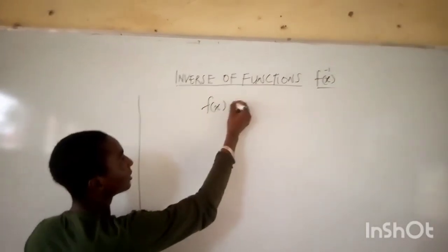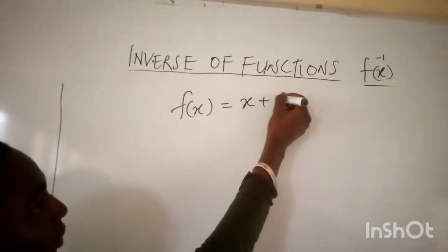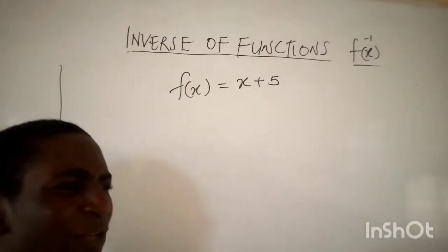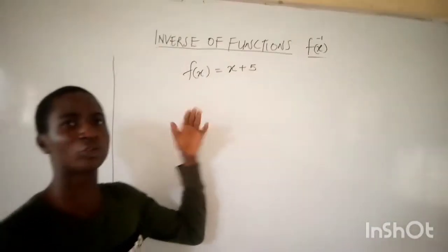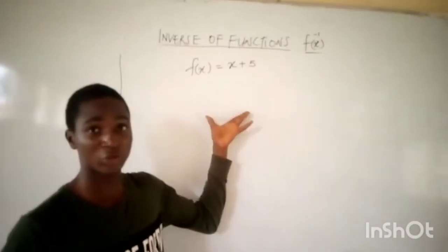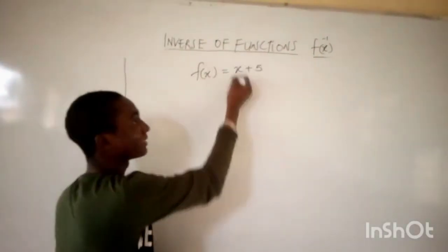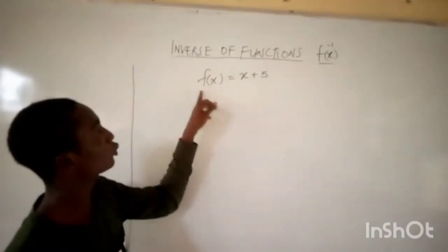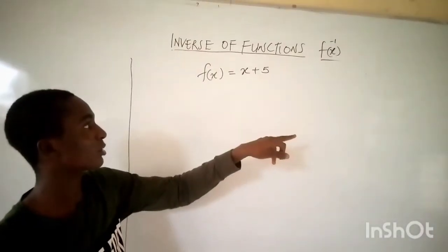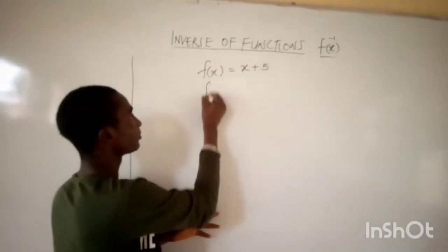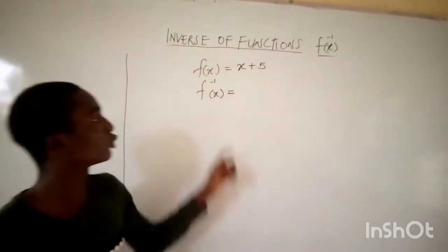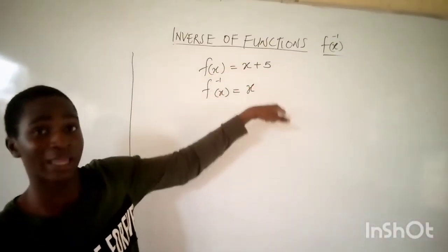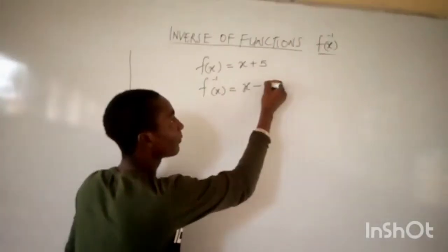Let's say f(x) is equal to x plus 5. Now to get the inverse of this function, we have to keep in mind that a function does something to x in an equation. In this equation, the function takes x and adds 5 to it. The inverse of this will always take x, but it won't add 5 to x any longer.